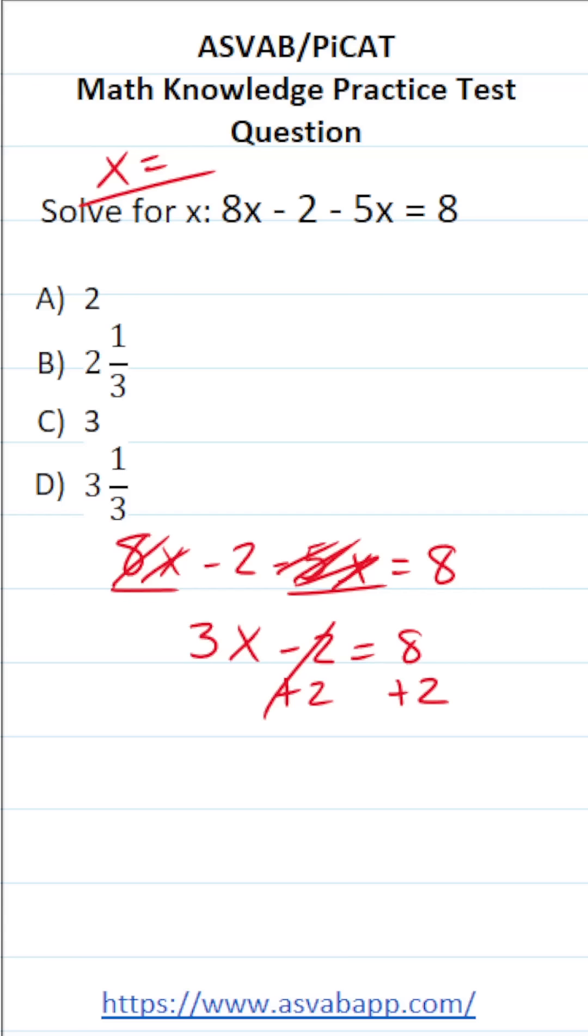In doing so, this crosses out, leaving me with 3x over here. 8 plus 2 is 10. Now finally, to get x by itself,